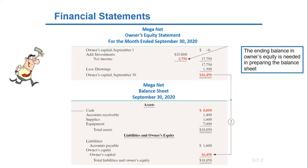The third financial statement is the balance sheet. It reports the assets, liabilities, and owner's equity at a specific date.